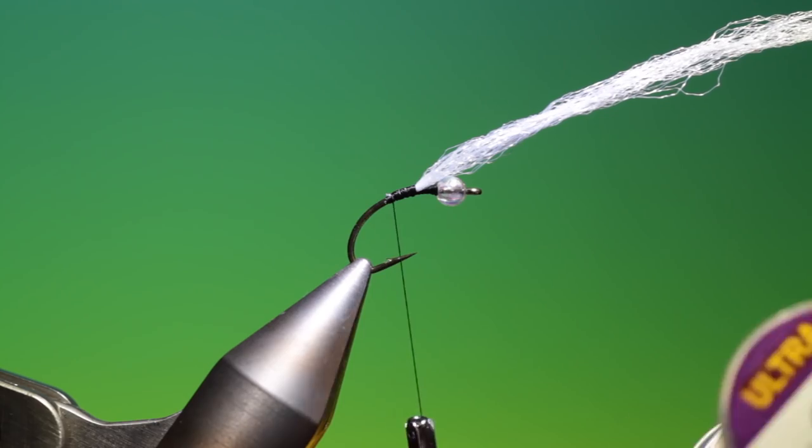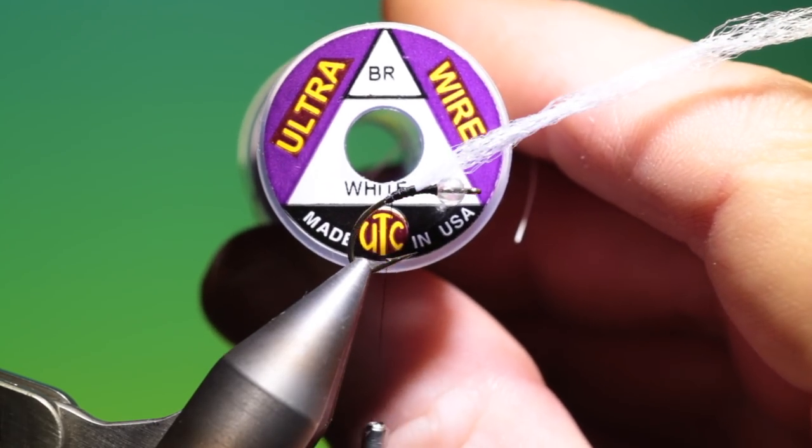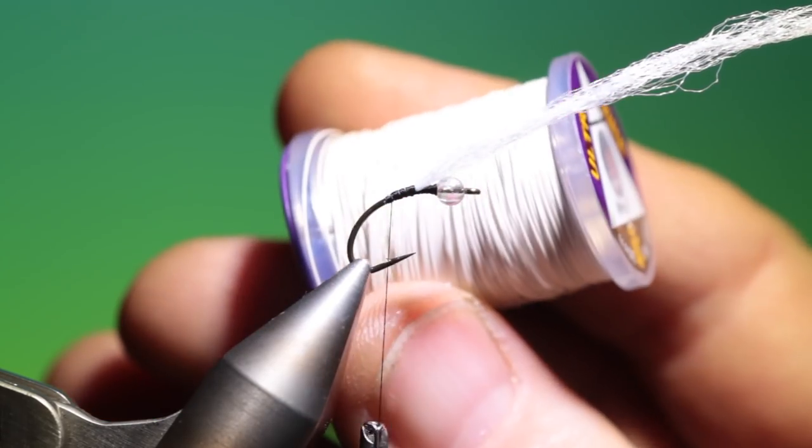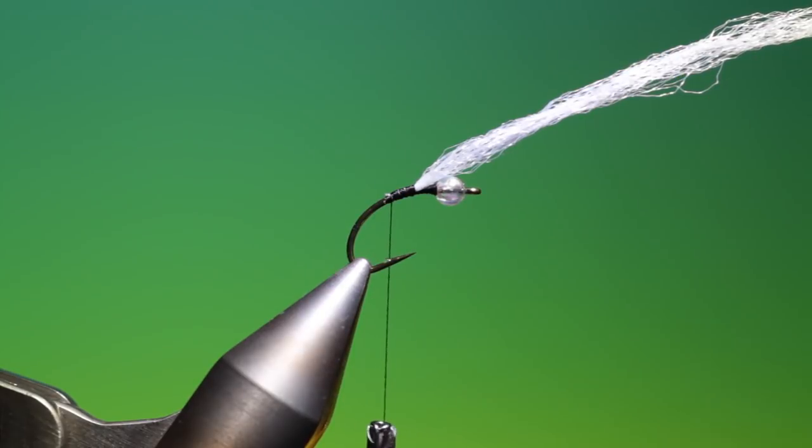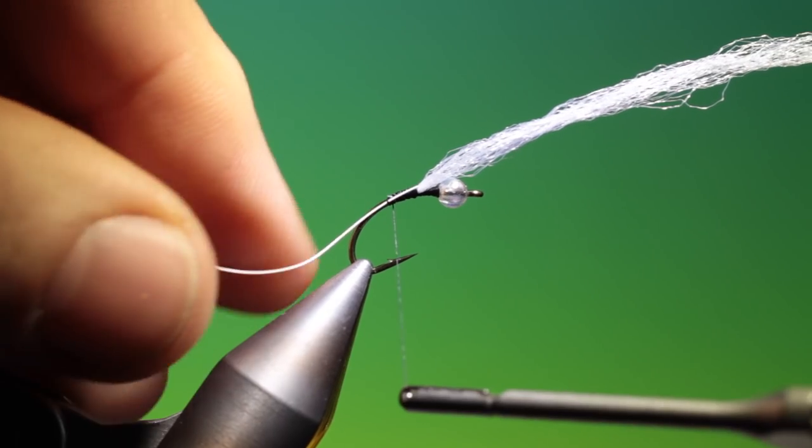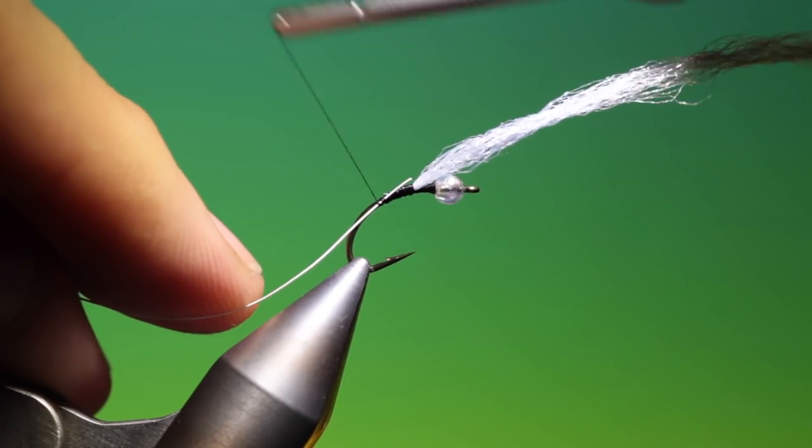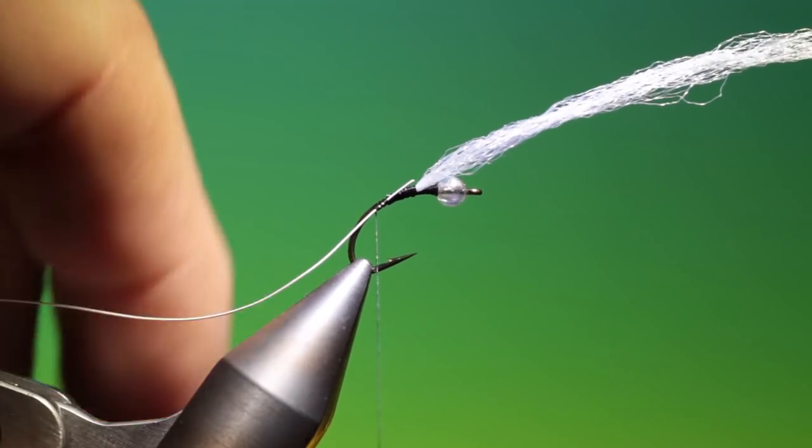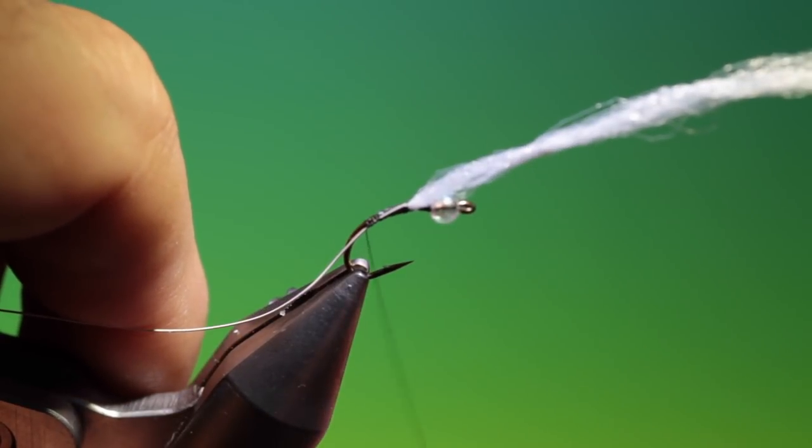Now what we need next is ultrawire from UTC. This is white, perfect for the zebra midge. So we just take a length of that. Just unwind my tying thread.